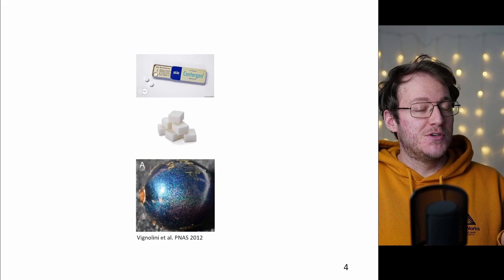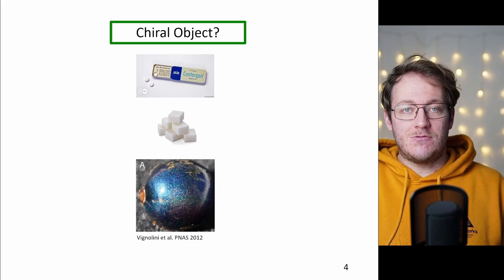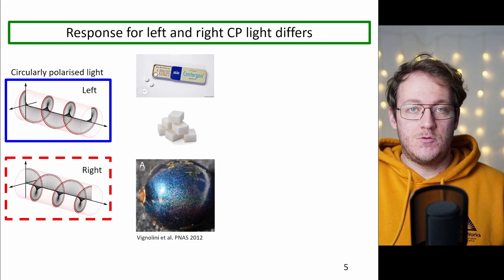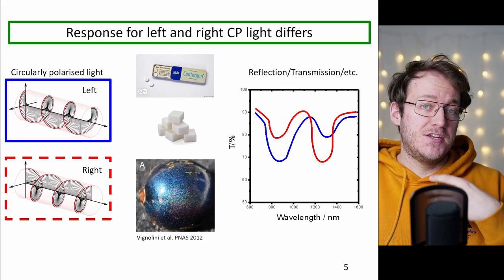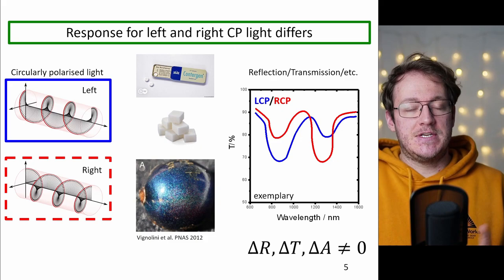There's plenty of examples of chiral materials, for example drugs or sugar or natural examples. Now you probably want to know whether an object is really chiral. What you can do is illuminate it with left and with right circularly polarized light and measure the reflection or the transmission. If the two signals are not overlapping and you have a difference in the reflection or transmission or absorption your object is said to be chiral.